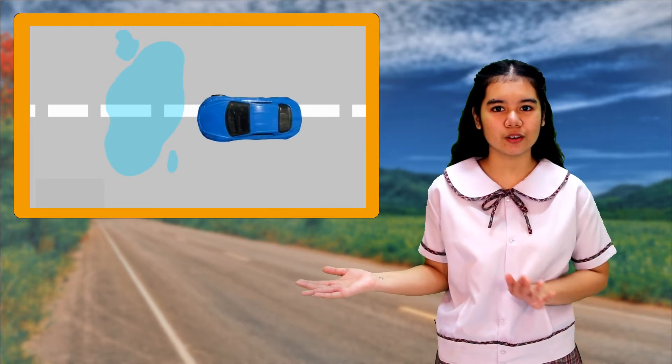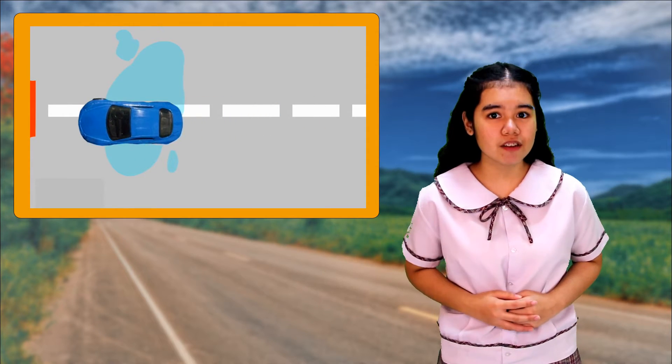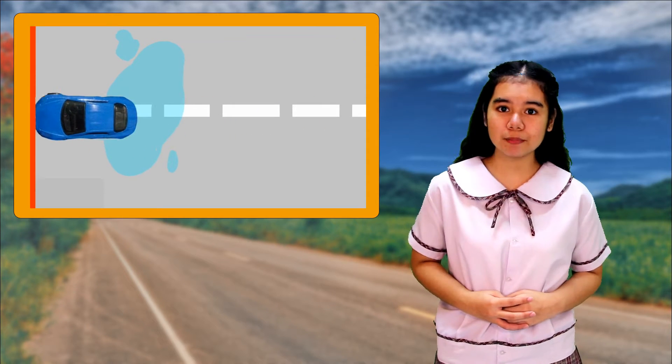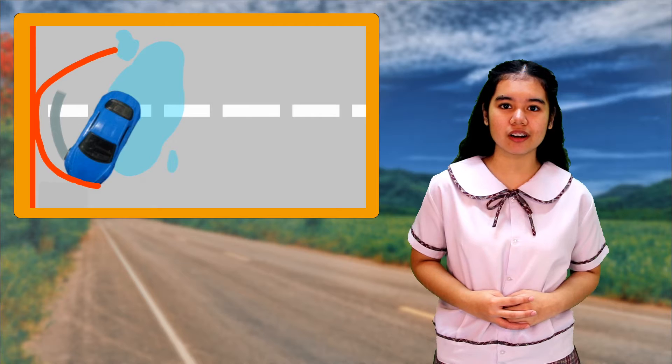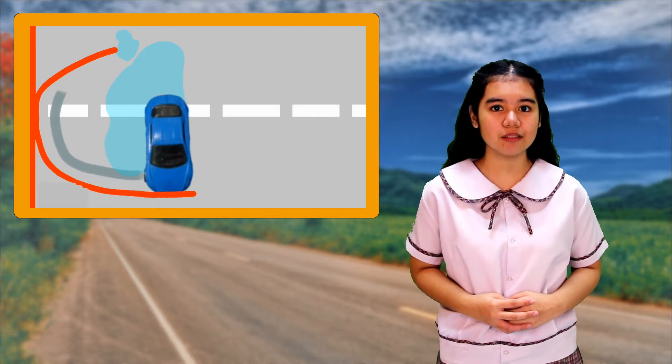It is because the object moves in the direction of the tangent to the curve. Likewise, if we are traveling in a car around a corner and we drive over something slippery on the road and our car starts to skip,